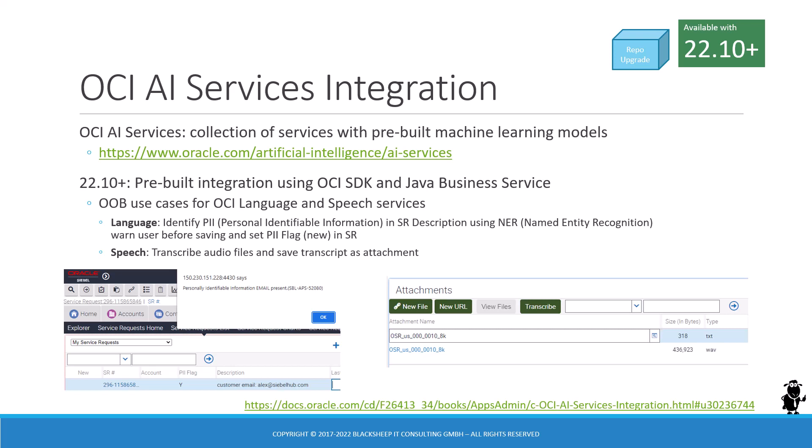The pre-built integration of Siebel CRM with those OCI AI Services leverages the OCI Java SDK, the software developer kit for Java, and has as a result a new Java business service which acts as the connector between Siebel and Oracle Cloud Infrastructure. Oracle has also created two out-of-the-box use cases to demonstrate the capabilities, electing the OCI language and speech services for those use cases.